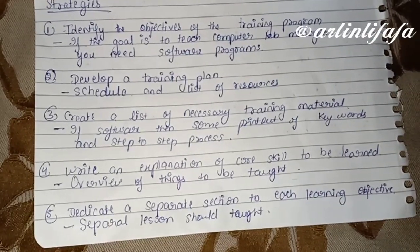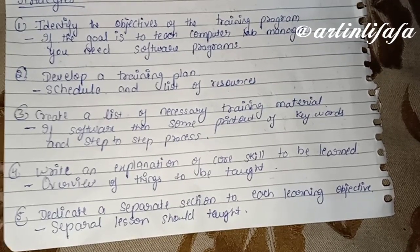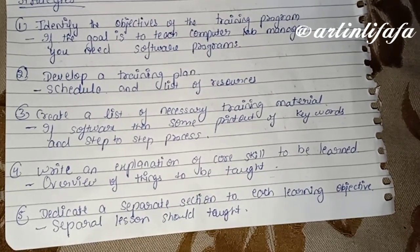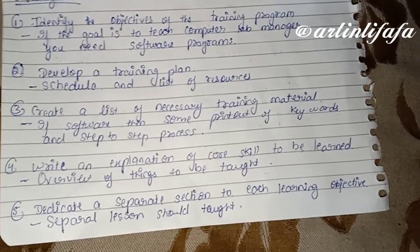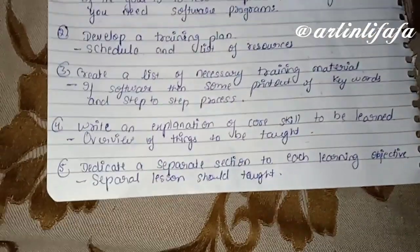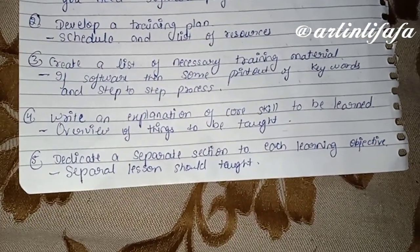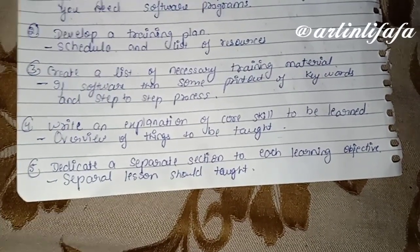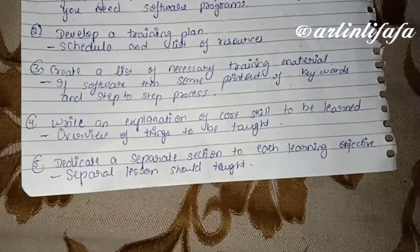Next is create a list of necessary training material — necessary training material तुम्हारे पास available होना चाहिए। जैसे कि अगर software का था तो printouts होने चाहिए important keywords और step-to-step processes के। Next is write an explanation of core skills to be learned — सारा overview एक साथ होना चाहिए, explanation होनी चाहिए हर चीज़ की जो तुम सिखा रहे हो।